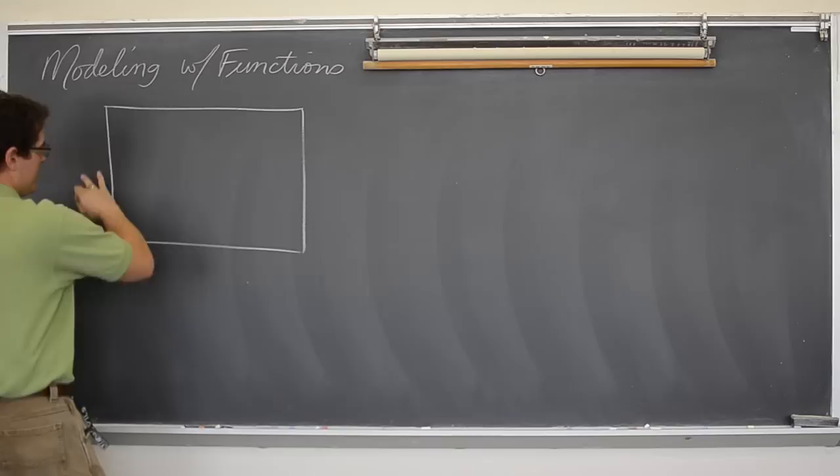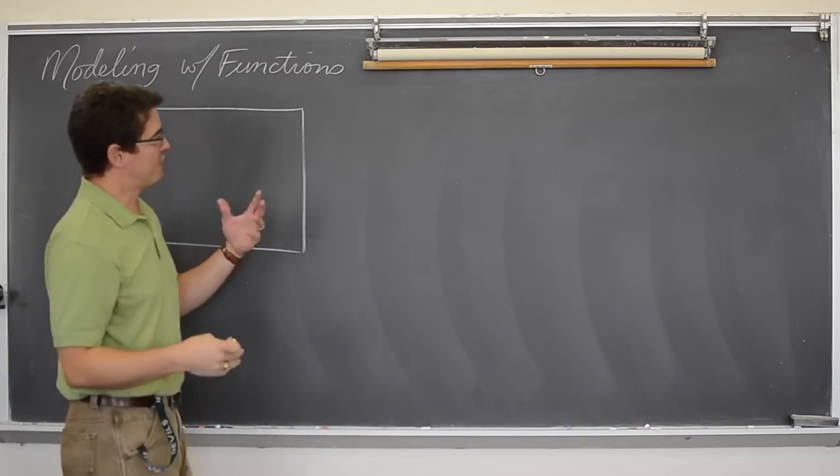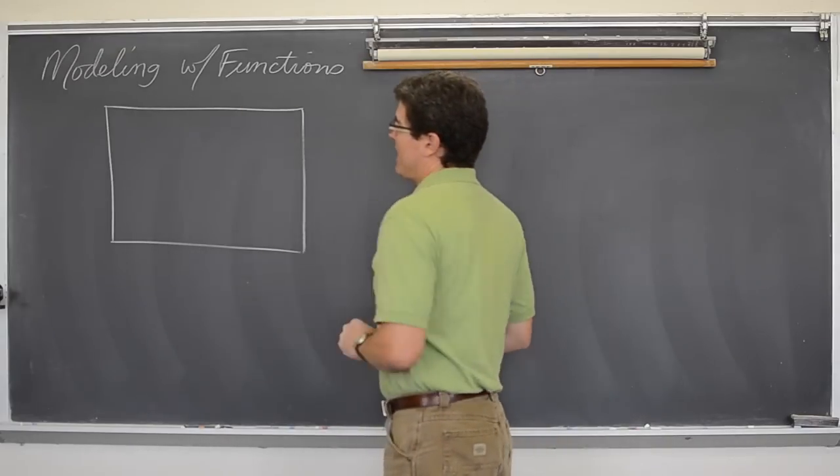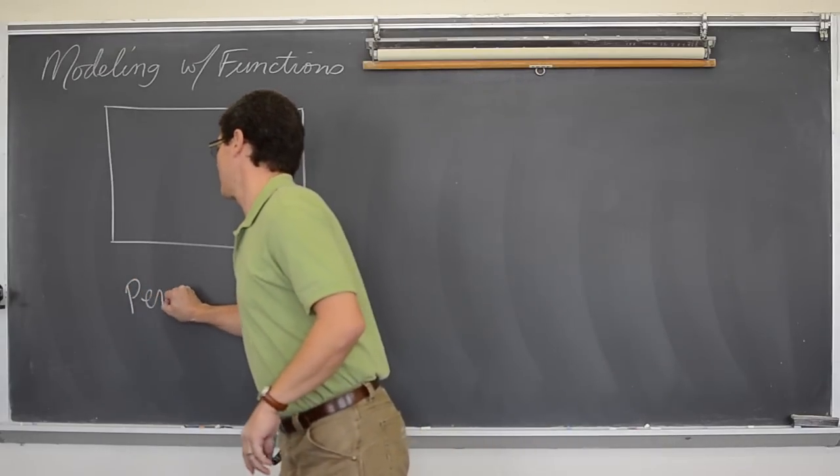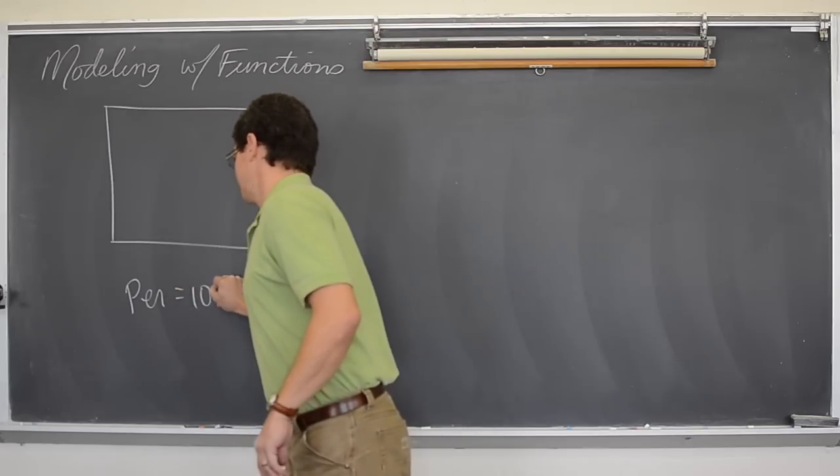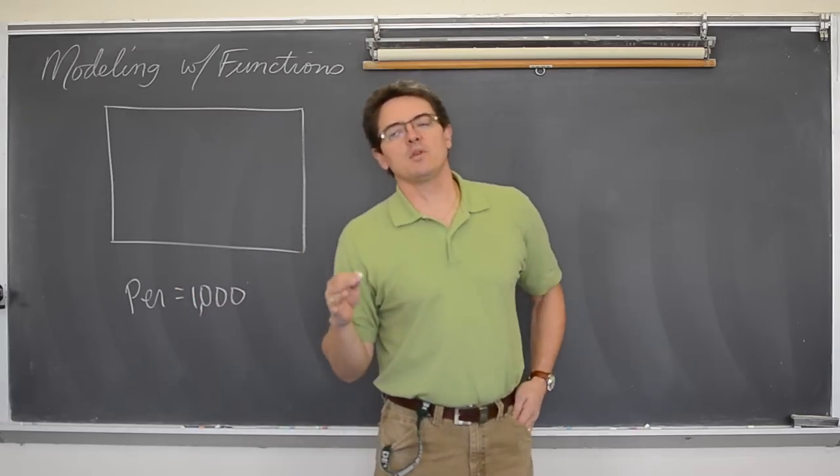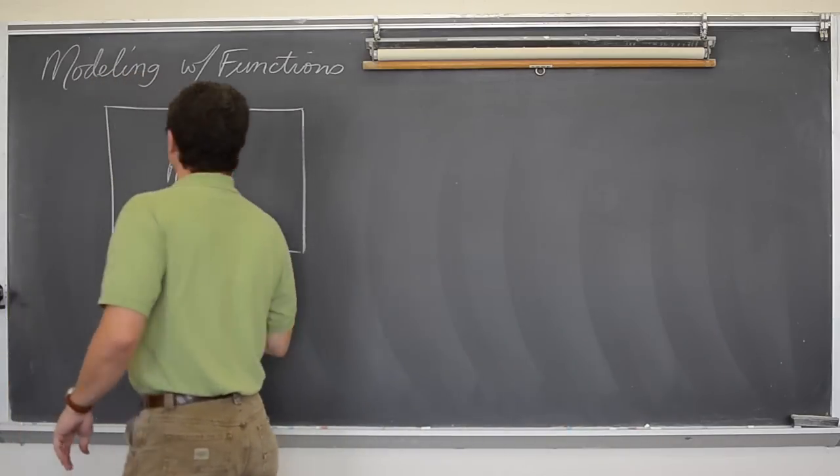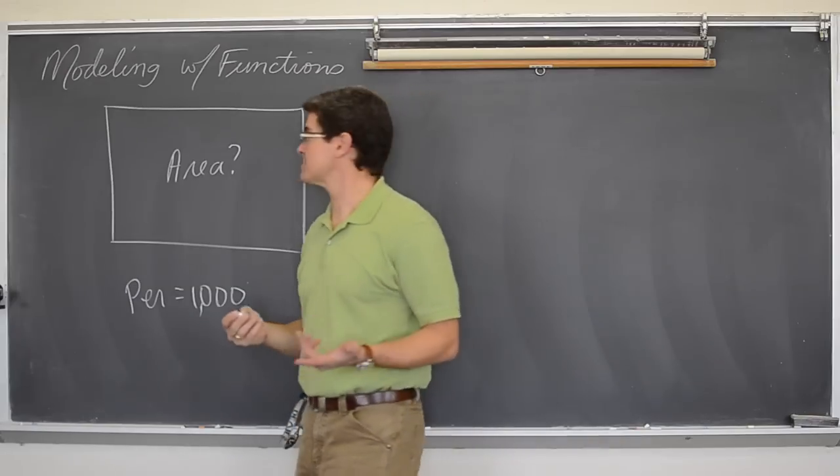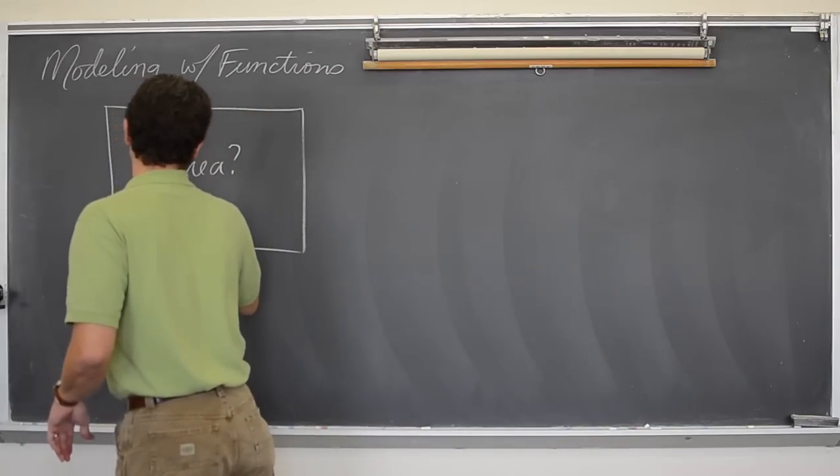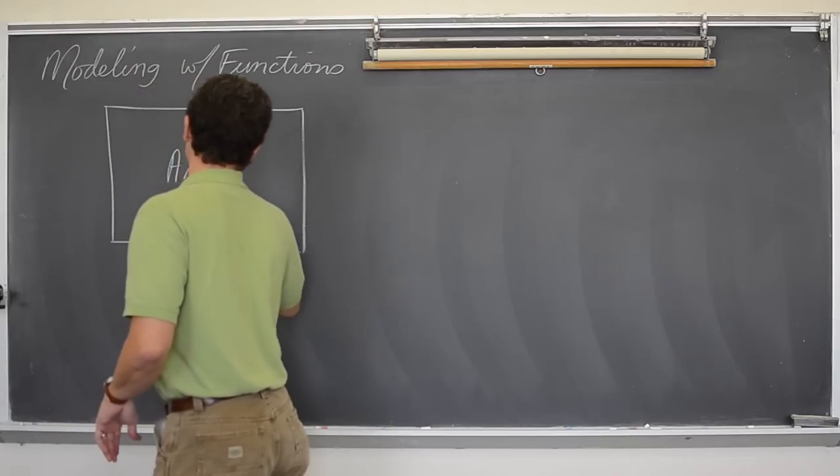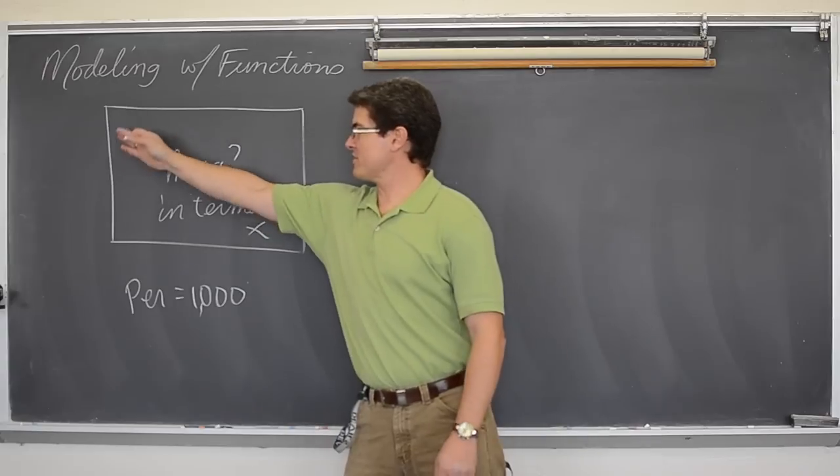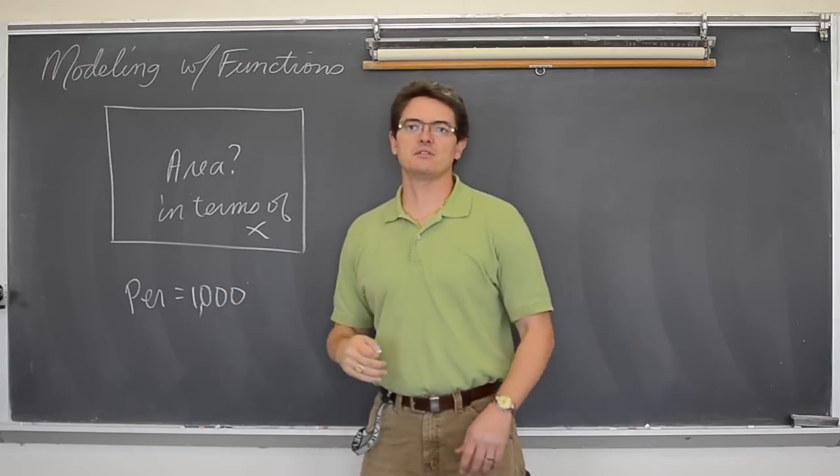So I want to build a rectangle, maybe a fence in a field or a box or whatever. But I'm going to do something with a rectangular shape that has a perimeter equal to 1000. Can I write a formula for the area of this rectangle that is only in terms of x? Area in terms of just x. Well first of all,